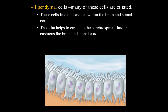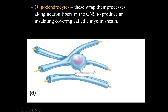Next up, you have ependymal cells. The ones we'll discuss have cilia on them. That cilia beats to create a current, which helps keep cerebrospinal fluid, or CSF, moving. And then last for right now, oligodendrocytes. If you've ever heard of Schwann cells from high school, these are the same thing as Schwann cells, only they're in the central nervous system instead of the peripheral nervous system. What they do is wrap around an axon several times, creating an insulating layer that makes impulses travel faster.